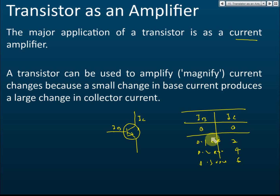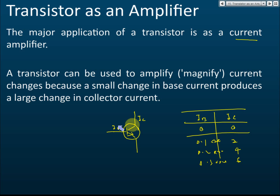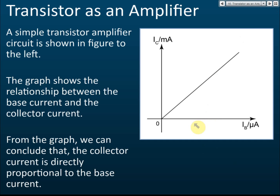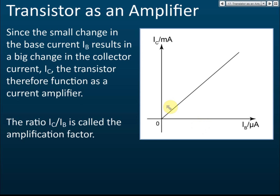For some transistors, the collector current can be 80, 200, 1000, or even 2000 times higher than the base current — it depends on the transistor. The number of times the collector current is higher than the base current is called the amplification factor. The amplification factor is the ratio IC divided by IB, which is also equal to the gradient of the IC vs IB graph.